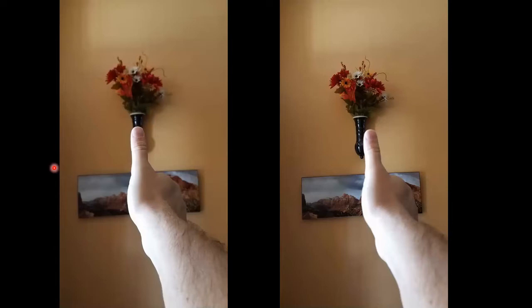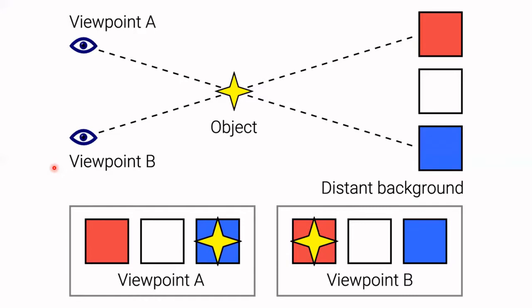As a general rule, things that are closer to your eyeballs exhibit more parallax when you switch eyeballs than do things farther from your face. You can understand that by looking at this diagram. Here are the two eyeballs on either side of your face. When you're looking with one eyeball, your line of sight passes through the object and strikes something behind it. But then when you switch eyes, the line of sight heads off in a different direction.